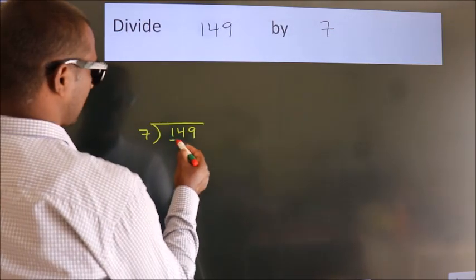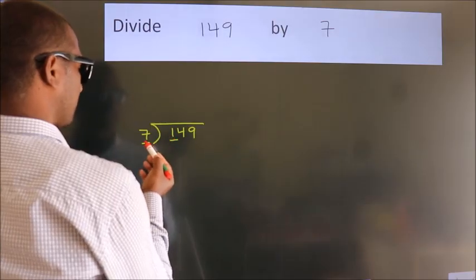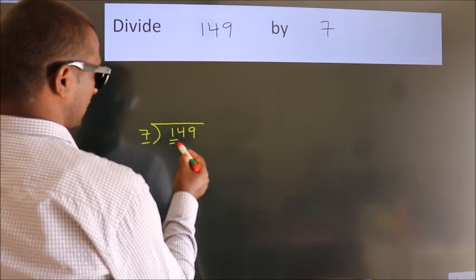Here we have 1, here 7. 1 smaller than 7. So we should take 2 numbers, 14.